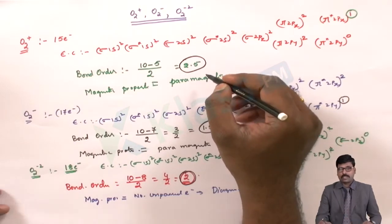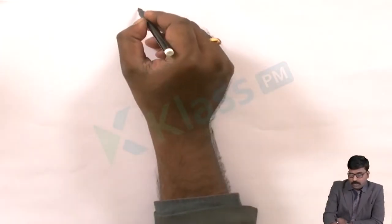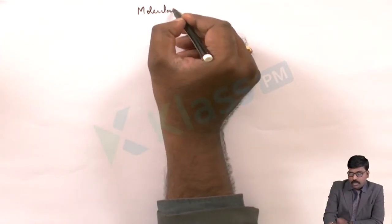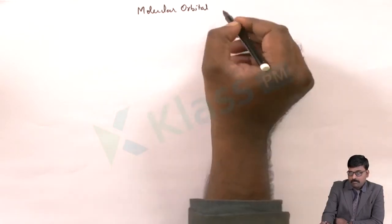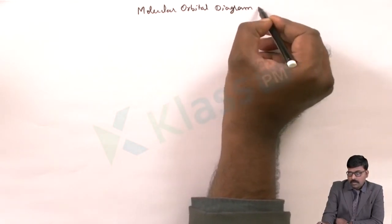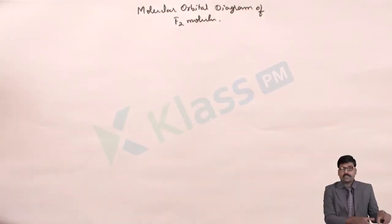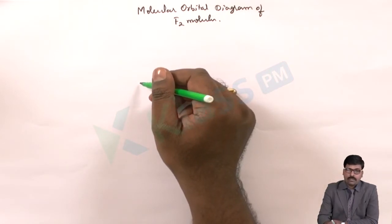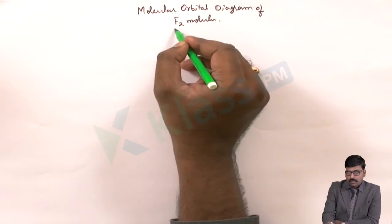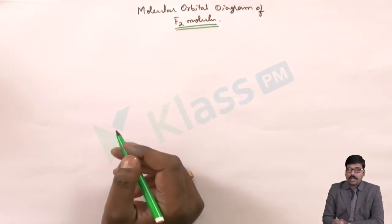Now we will see the molecular orbital diagram of the F2 molecule. So far we have seen the nitrogen molecule, oxygen molecule, and the ions of nitrogen and oxygen. Now we will draw the molecular orbital diagram for F2.